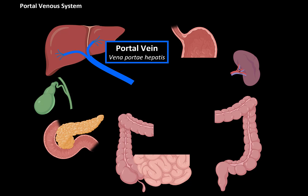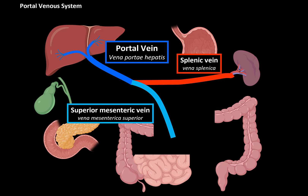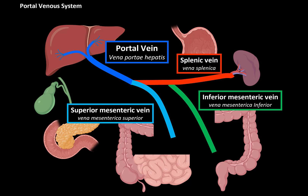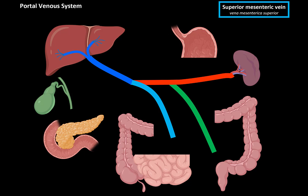The portal vein is formed by three major veins: the superior mesenteric vein, the splenic vein, and the inferior mesenteric vein. Let's go through all the tributaries of the portal venous system, starting with the superior mesenteric first.